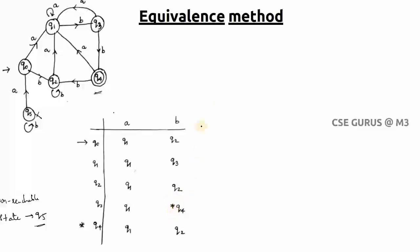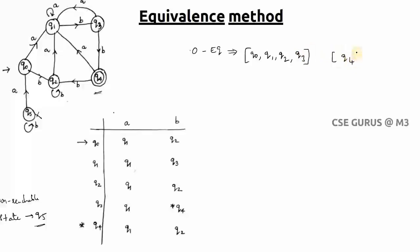In the equivalence method, we first find zero-equivalent states by separating non-final states and final states. The non-final states are q0, q1, q2, and q3, while q4 is the only final state. This separation forms the zero-equivalence partition.